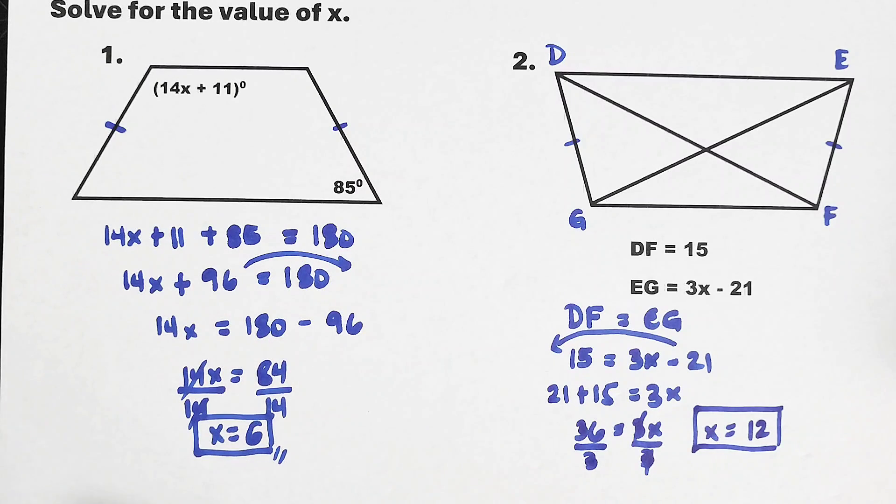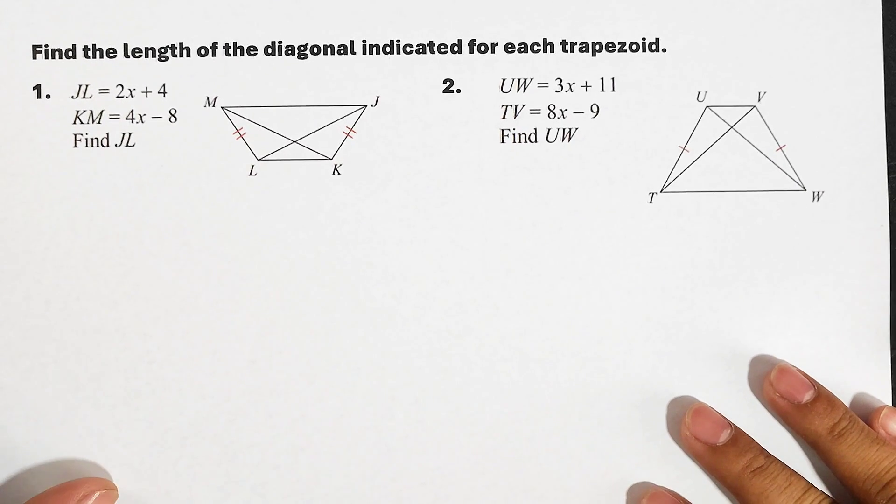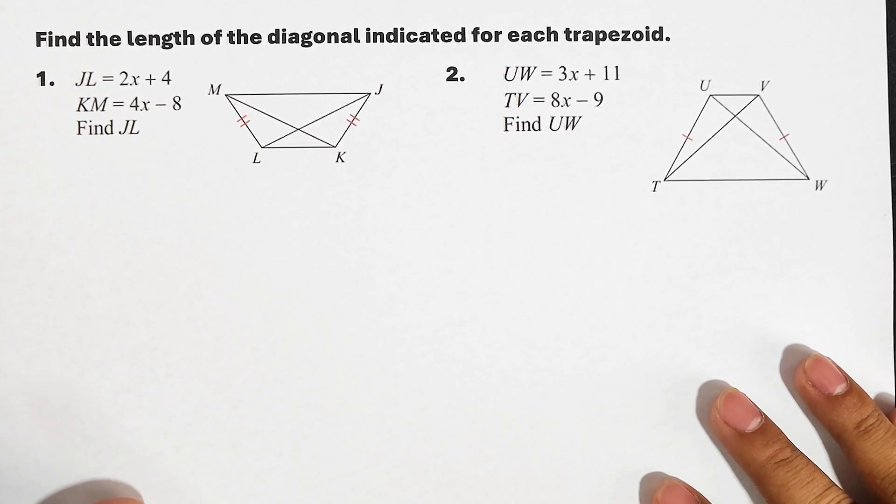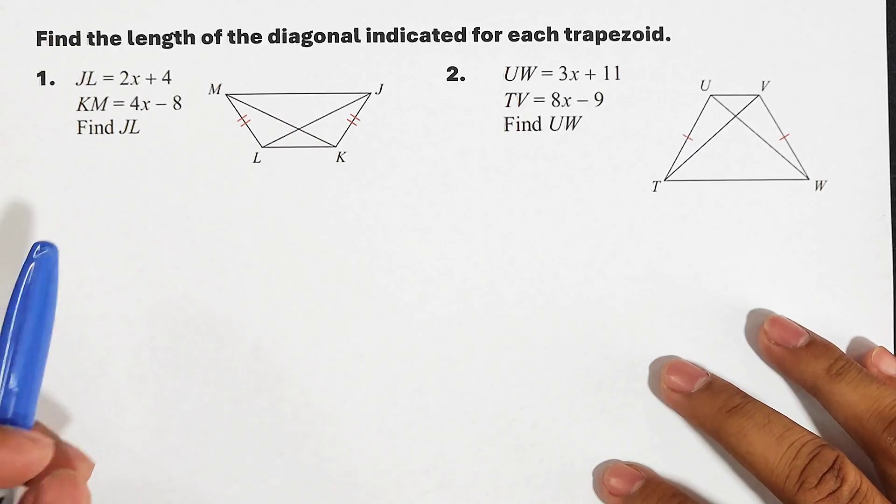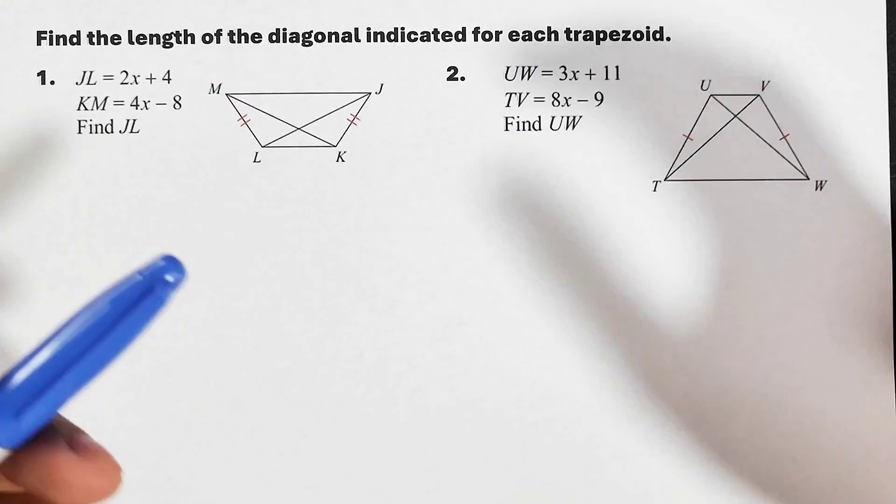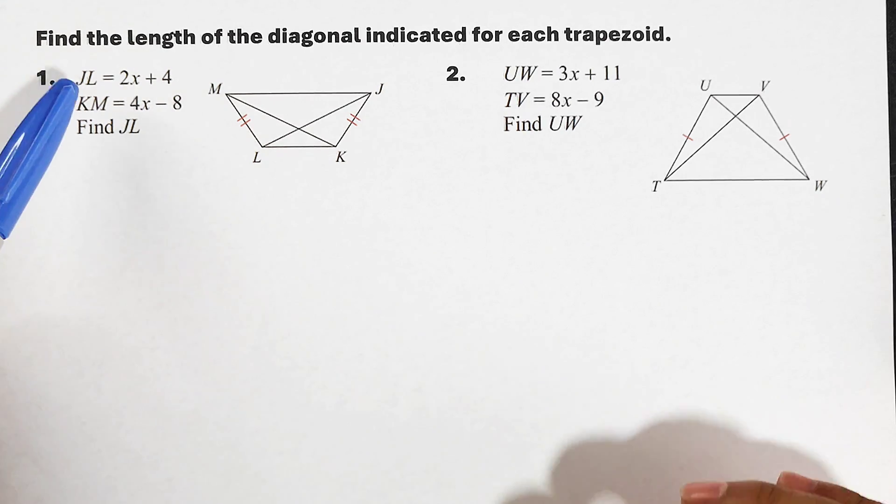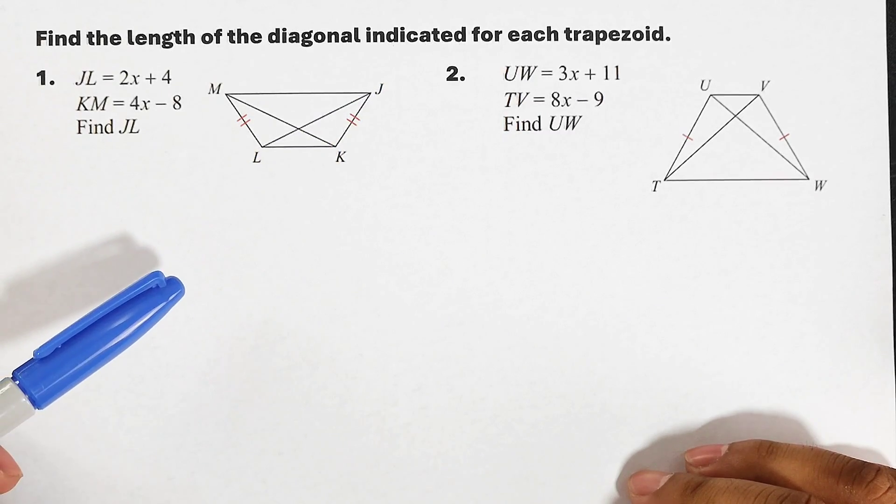And that's it, guys. So as you can see, we're done with example number one and number two where we're just trying to solve for the value of x. In our next example, we will do the same, but at the end we will figure out what is the measurement of the missing part of a given trapezoid. So let's proceed. We have here: find the length of the diagonal indicated for each trapezoid. So as you can see, all of them are diagonals.